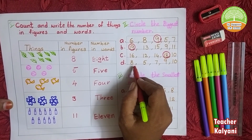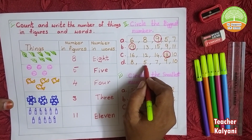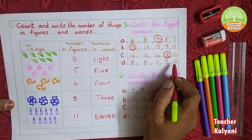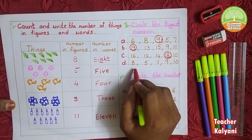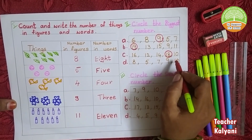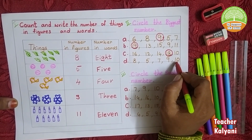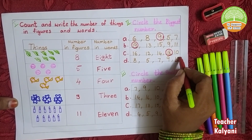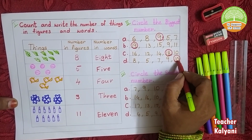Next one: 8, 5, 7, 9, 10. Which is the biggest number in this box? 10. Okay, 10 is the biggest number.